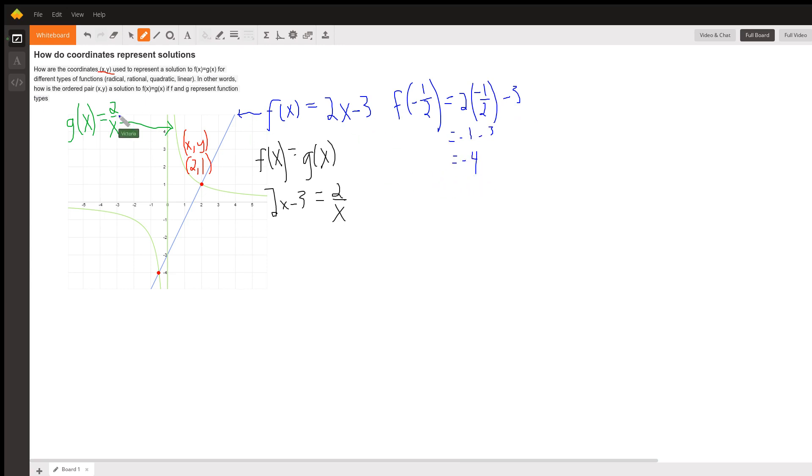Now, does it work for this? What is g of negative 1 half? Well, that's 2 over negative 1 half. And because we're dividing by a fraction, we're going to multiply by the reciprocal. And that gives us negative 4.